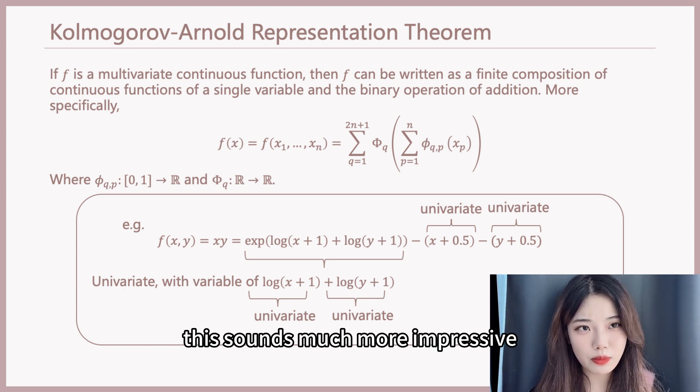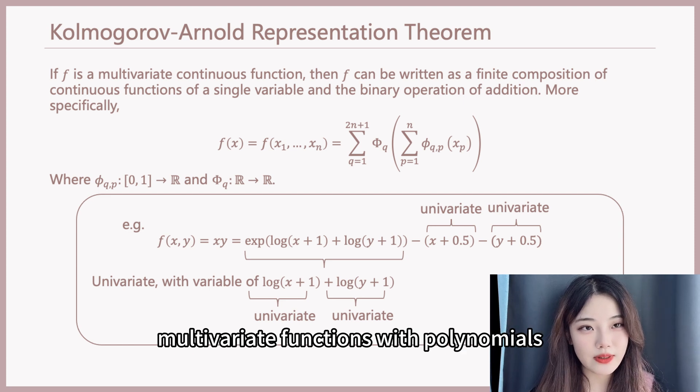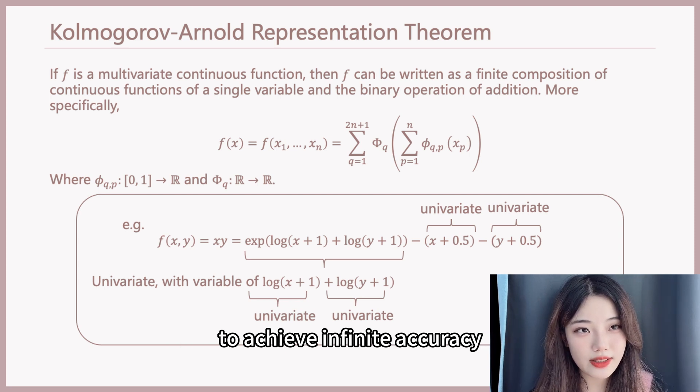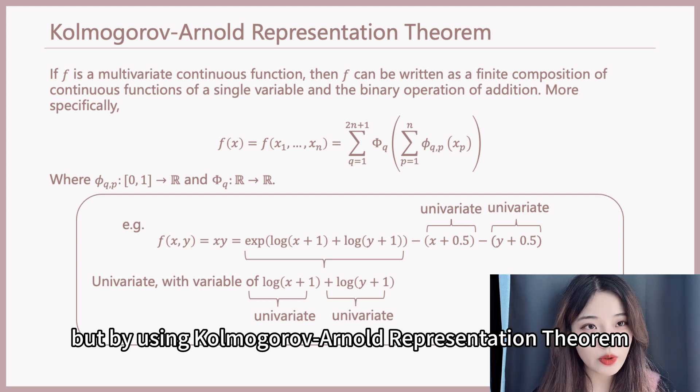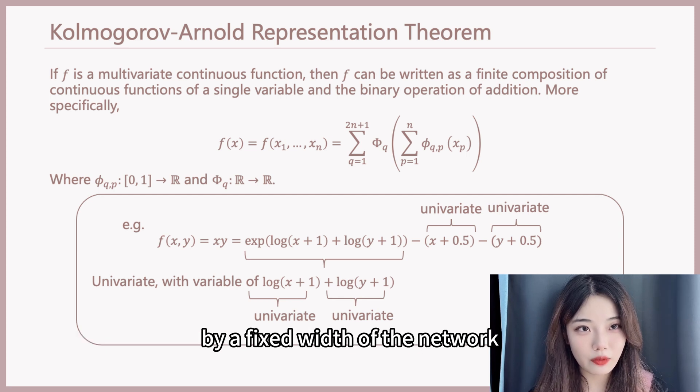This sounds much more impressive than using neural networks to approximate multivariate functions with polynomials, because we need infinite hidden units to achieve infinite accuracy. But by using Kolmogorov-Arnold representation theorem, we can achieve infinite accuracy by a fixed width of the network.